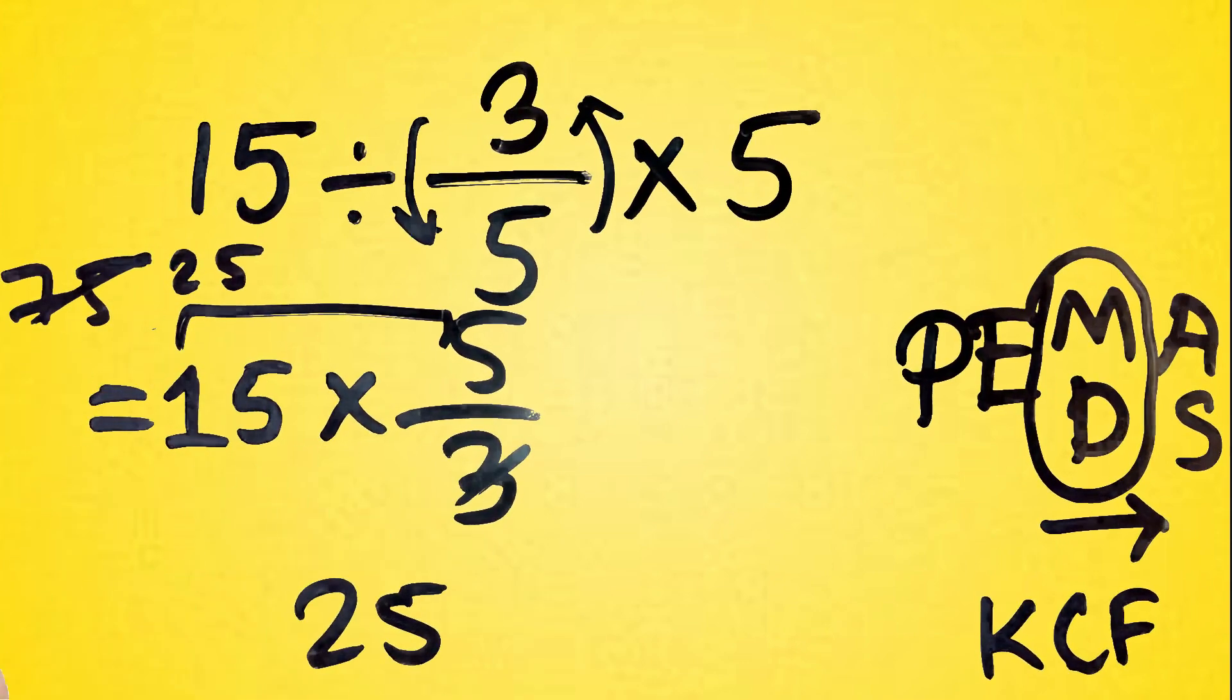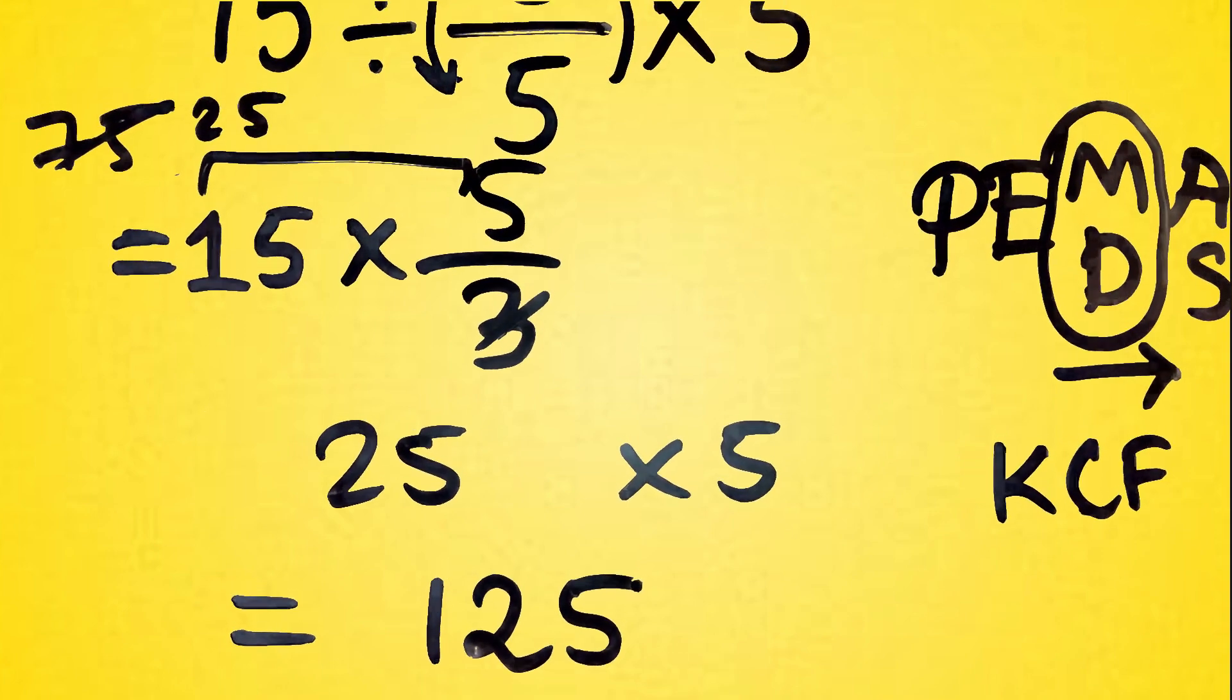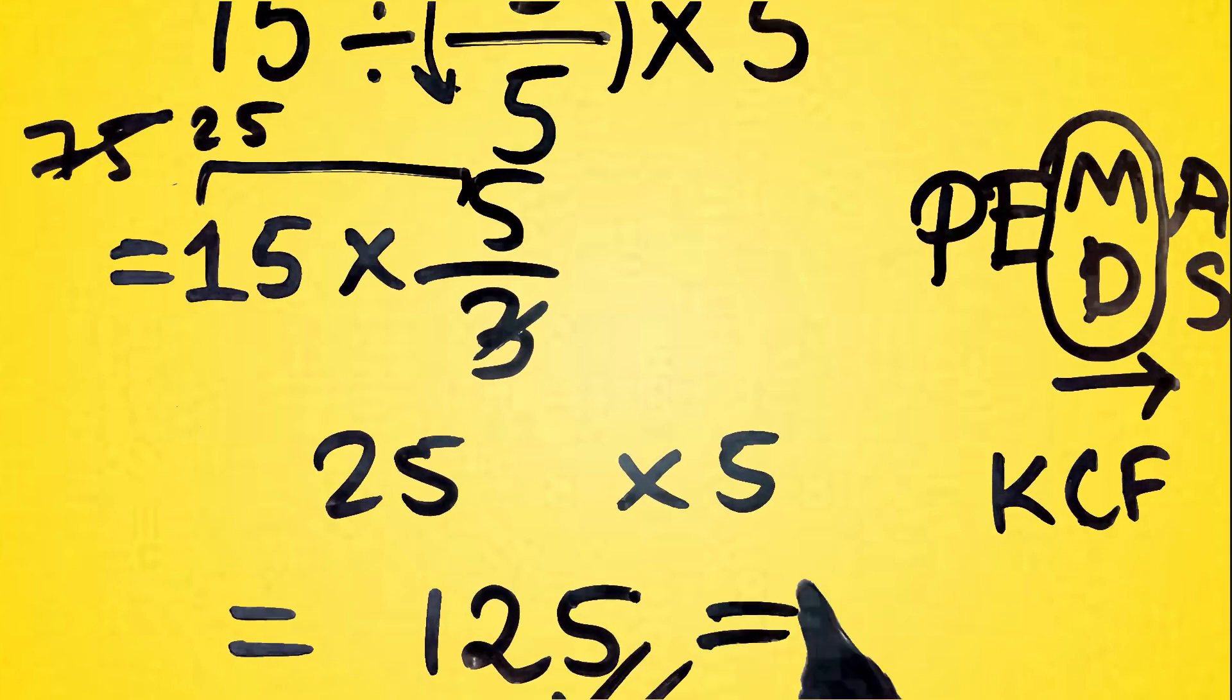Step 2, now multiply by the last 5. So 25 times 5 equals 125. So the correct answer is 125, not 5.